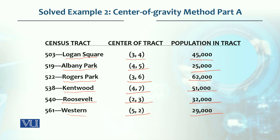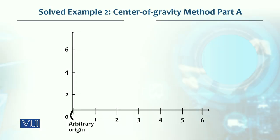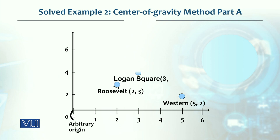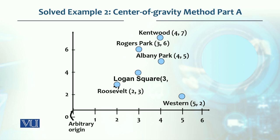On this basis, we have to calculate the center of gravity — the x and y coordinates. We need to locate the relative x-axis and y-axis positions. Western is at (5,2), Roosevelt is at (2,3), Logan Square is at (3,4), Albany Park at (4,5), Rogers Park at (3,6), and Kentwood is at (4,7). We have to calculate where the center of gravity falls.